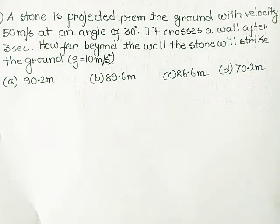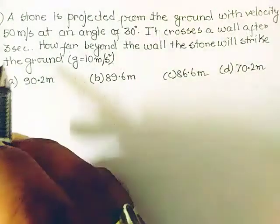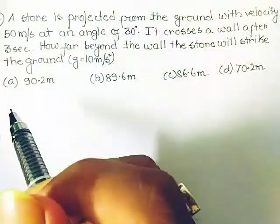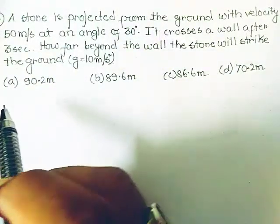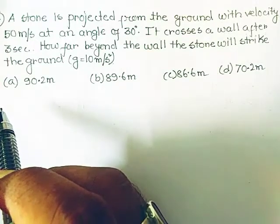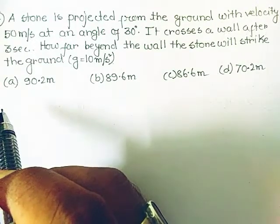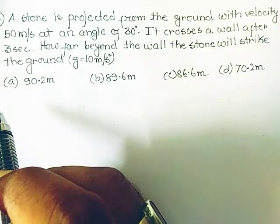A stone is projected from the ground with velocity 50 meters per second at an angle of 30 degrees. It crosses a wall after 3 seconds. How far beyond the wall will the stone strike the ground?